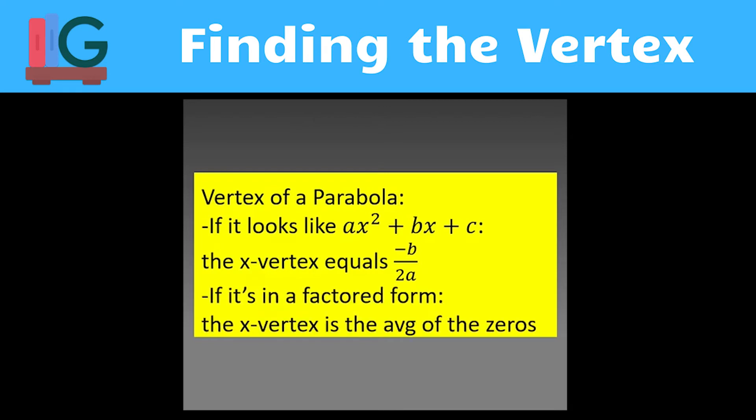If you have it in a factored format, then the x value of the vertex is the average of the zeros. The factored format is when you take a quadratic, set it equal to zero, factor it, and get those two groups with parentheses — something we see really often.